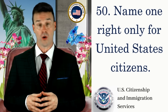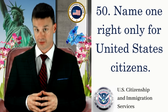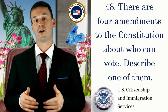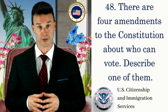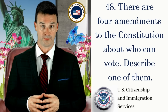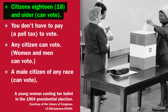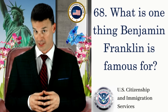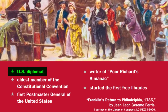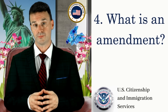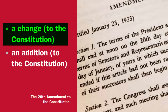Name one right only for United States citizens. Vote in a federal election. There are four amendments to the Constitution about who can vote. Citizens 18 and older can vote. What is one thing Benjamin Franklin is famous for? U.S. diplomat. What is an amendment? A change to the Constitution.